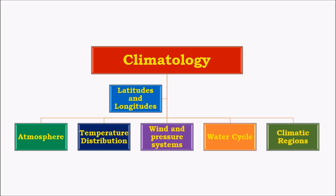So in climatology, the core concepts are atmosphere, temperature distribution, wind and pressure systems, water cycle, and climatic regions. Atmosphere was covered in the previous video. Temperature distribution is also an important concept in which we'll study about heat budget, latitudinal heat balance, etc.